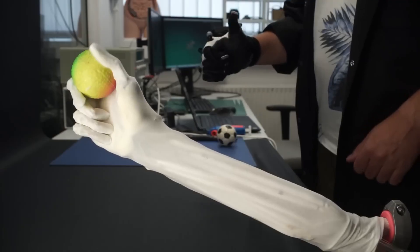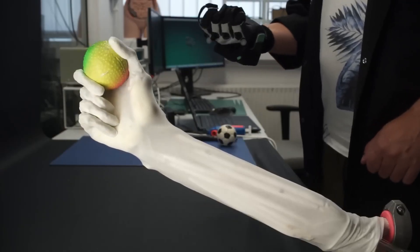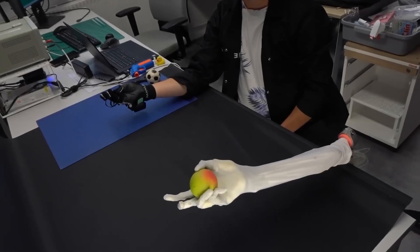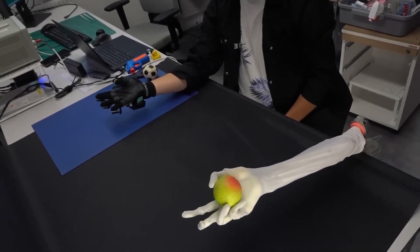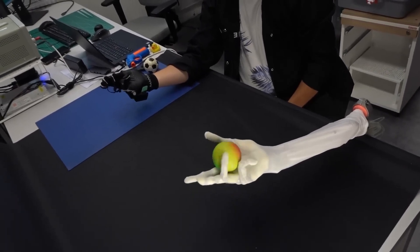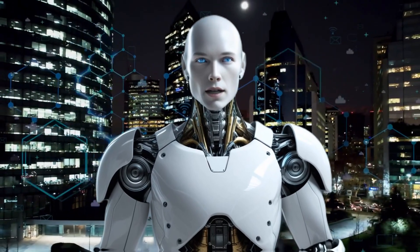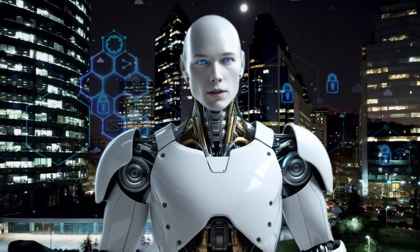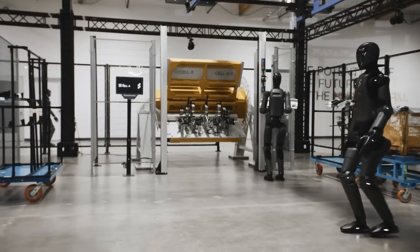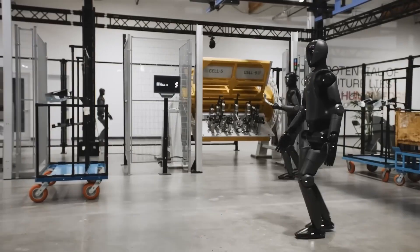A single muscle fiber weighing just 3 grams can generate a kilogram of force. It can also contract 30% of its length in under 50 milliseconds. That means Clone Alpha moves in a way that's smooth, lifelike, and nothing like the stiff mechanical motions we're used to seeing in robots.